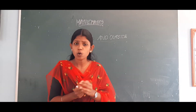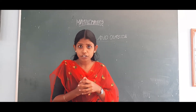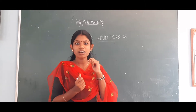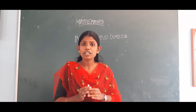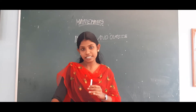When your mother cuts a mango, where do you find the seed? Inside the fruit. The seed is covered with the fruit. So it means something which is covered with the particular object is called inside.